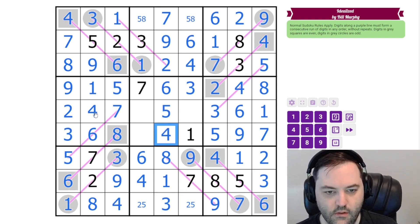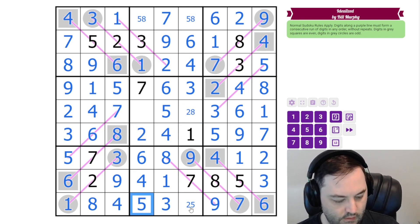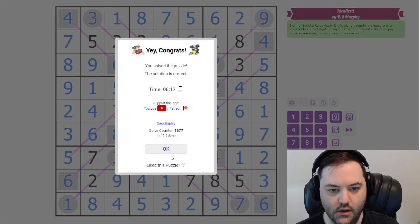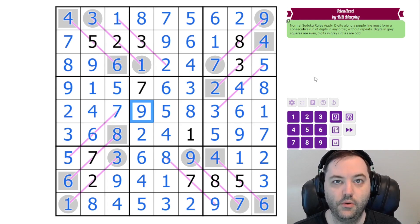Here, we need four and five. Now the order four and five here. This is two, five, or eight, which is not resolved. This is just two though. So that gives us five, two, eight. Five, eight, and nine. And that is how you solve idealized by Bill Murphy. Hope you enjoyed that puzzle.